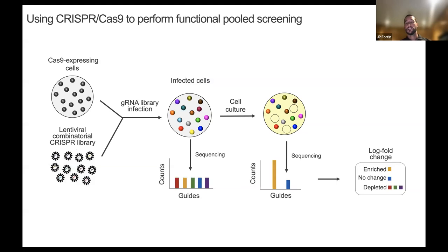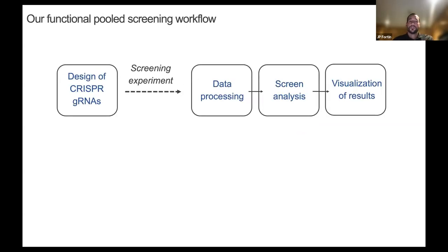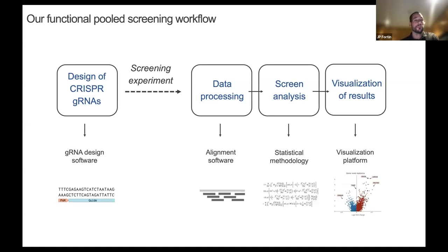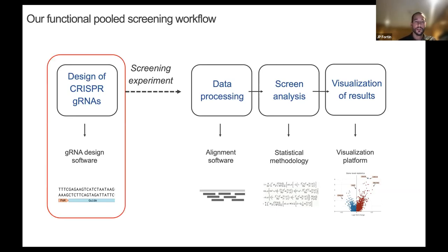Guide RNAs targeting essential genes for cell survival are going to deplete in the final population because the knockout makes the cells die. To support those kinds of experiments, we've been developing different types of pipelines. Today I'm going to talk about the very first step of the pipeline: designing those guide RNAs. For a given gene, we have multiple choices, so the question is which guide RNA should you design to have an optimal experiment? This is the part that we open sourced; the rest of the pipeline is not open source yet.